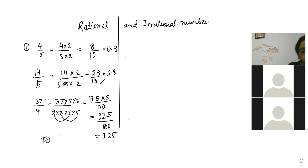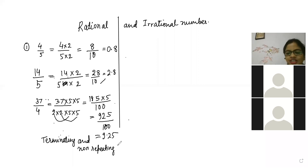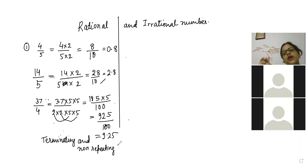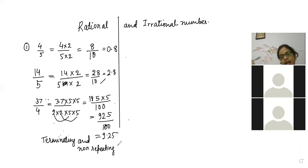So one type of rational number is terminating and non-repeating. That means the number can get finished — we are not continuing the number, it has an end, like 9.25, 2.8, 0.8 — we are not exceeding the number. So rational numbers are of two types, and the first type is terminating and non-repeating.